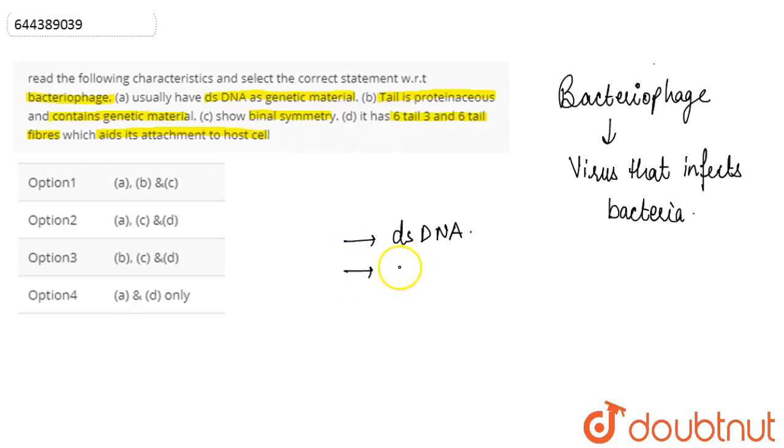It is surrounded by the capsid which is proteinaceous in nature, consisting of protein. The tail doesn't contain the genetic material, so tail is not proteinaceous and doesn't contain genetic material. So this statement is wrong, whereas statement A is absolutely correct.